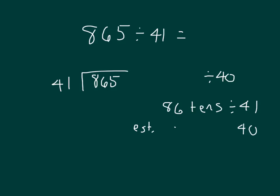And then it says 80 tens divided by 40. 80 tens divided by 40 is 2 tens. And that's why we can put a 2 right over the 6 right there in the tens place because that's what we're dividing there.